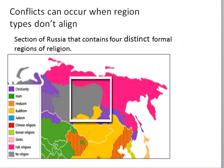Sometimes there are conflicts when political or formal and functional regions don't align exactly. Here is an example of several different formal regions of religion that overlap each other within one functional political region — you can have four distinct formal regions of religion within that one political region.